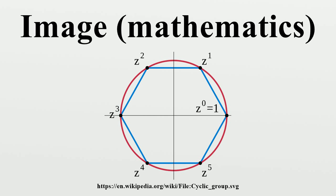Image of an element: If x is a member of X, then f(x) = y is the image of x under f. Y is alternatively known as the output of f for argument x.